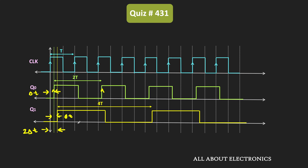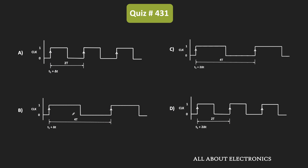As you can see, the time period of the Q1 waveform is equal to 4T, and with respect to the reference point, it is delayed by 2Δt. That means from the given four options, option C is the correct waveform. So for the given question, C is the correct answer.